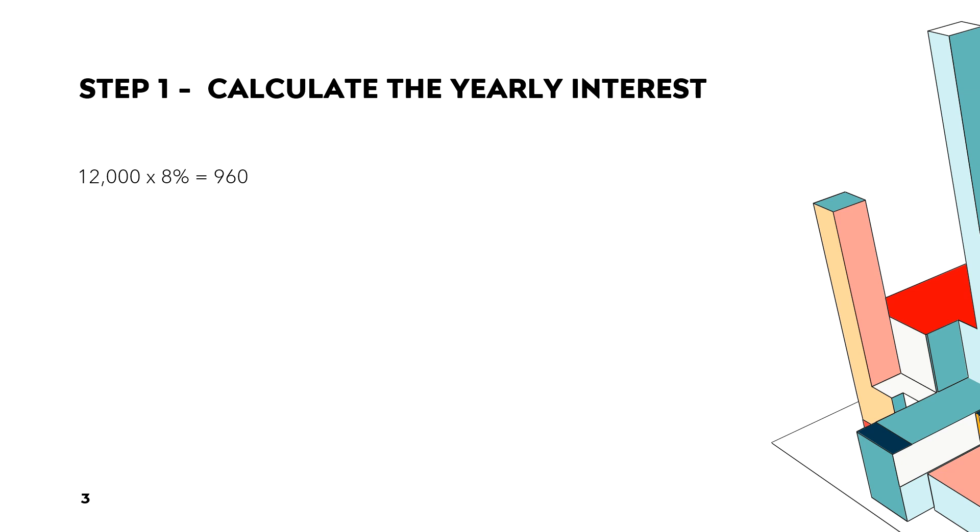Okay. Now, the next step is going to be, we're going to calculate the daily interest. Well, since it's 365 days in the year, that's what they told us, then it was 960 divided by 365, which is $2.63 per day. Now, they may tell you a 360-day year. So, make sure that you're aware of that. Not all the time when they're calculating these things, do they use 365 days for the year, but this time they did.